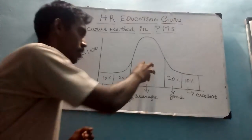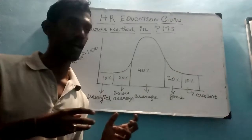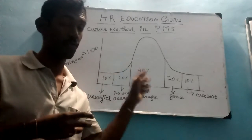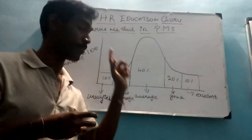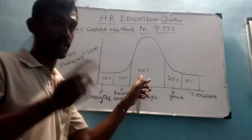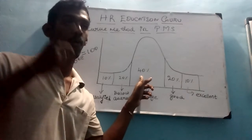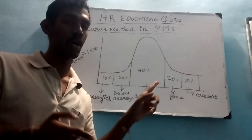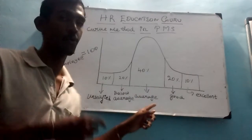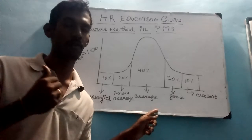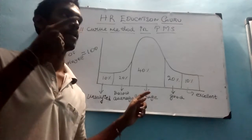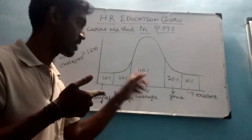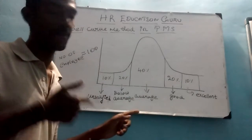And 40% of employees should be rated as average. You have to take special care of this 40% of people. They may raise the question of why they were not rated as good or excellent performers — why they were put in the average performer category. You should be in a position to answer this kind of employee.